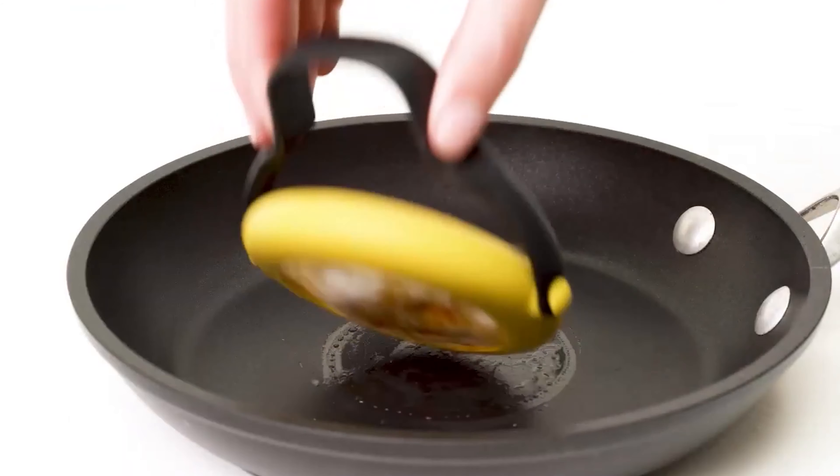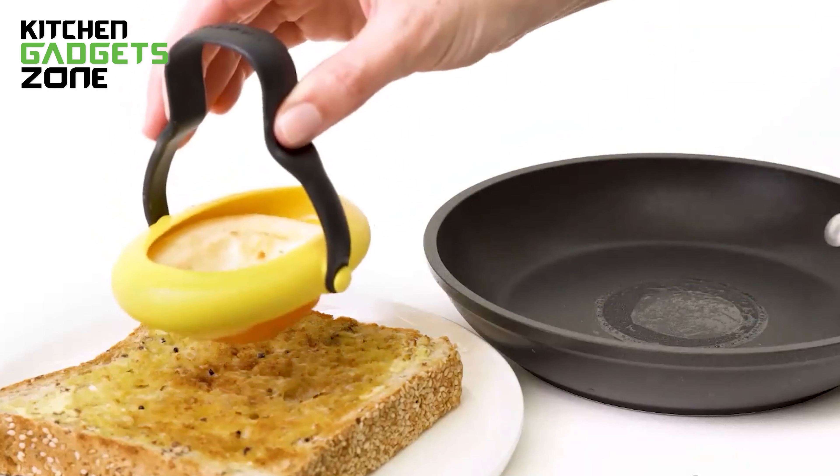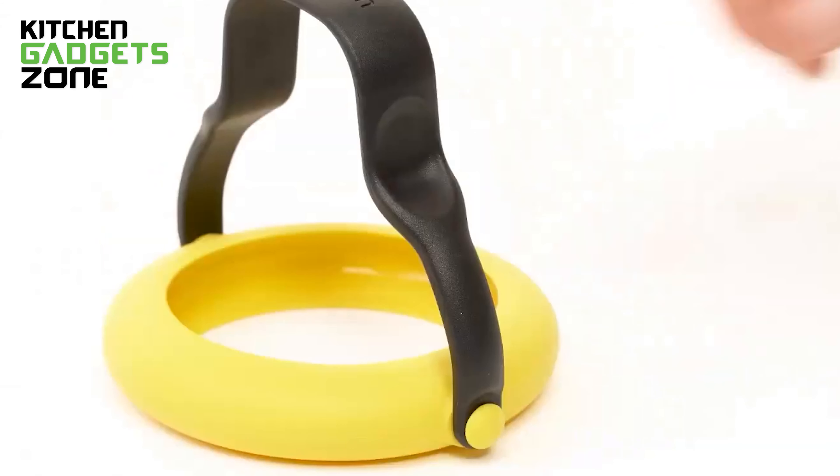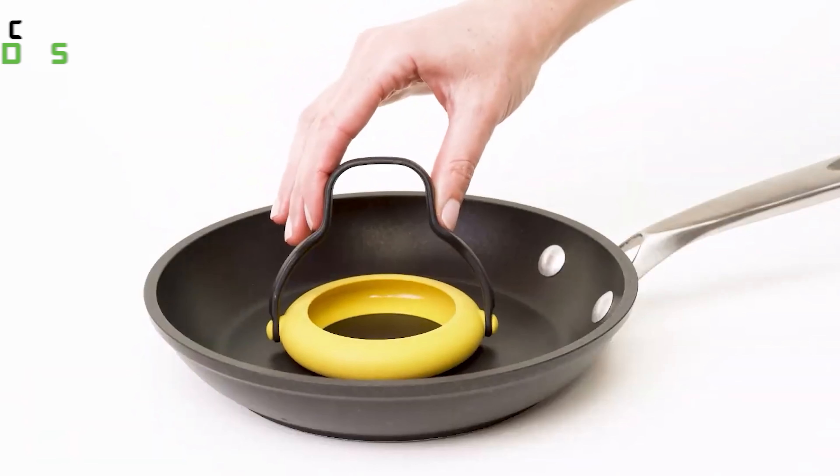The Fleg's rotating 360-degree handle stays up and away from the heat, keeping it cool to the touch for easy flipping and serving. Plus, its high heat-resistant nylon construction means it can handle even the hottest of pans.